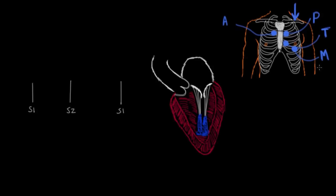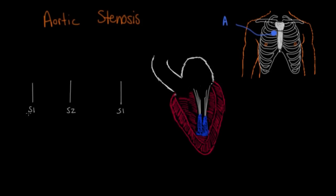The mitral area is also called the apex. The reason why we listen in these different positions is because we're actually listening where the blood is expected to travel as it goes through the valve in question. So let's talk about aortic stenosis. I'm going to take you through the progression of this murmur from S1 to S2 in terms of what's actually happening with the valve and with the heart muscle contracting. We're going to start off with S1.